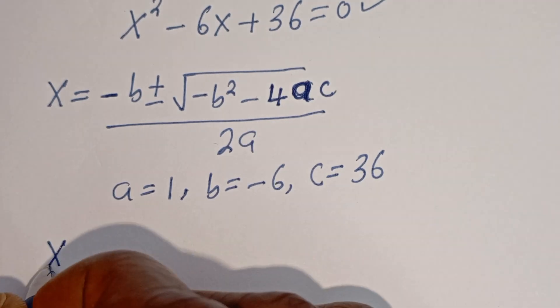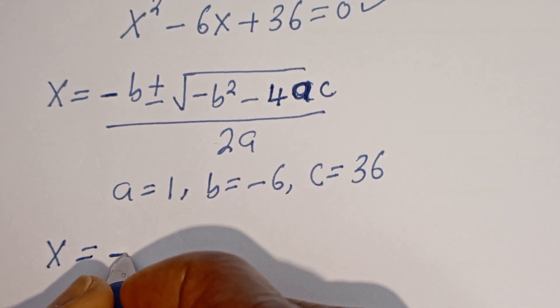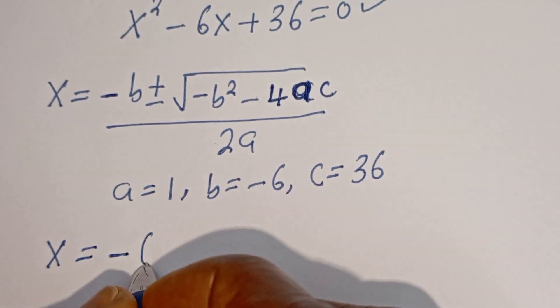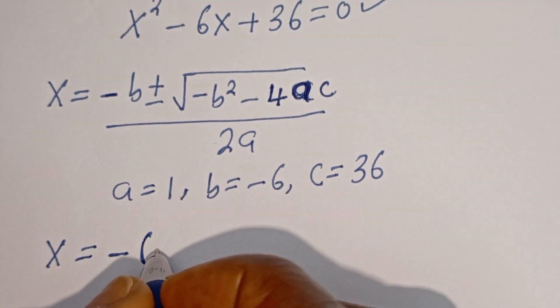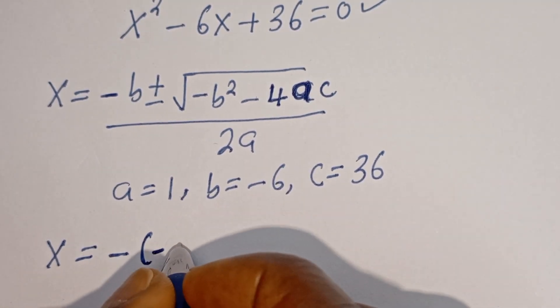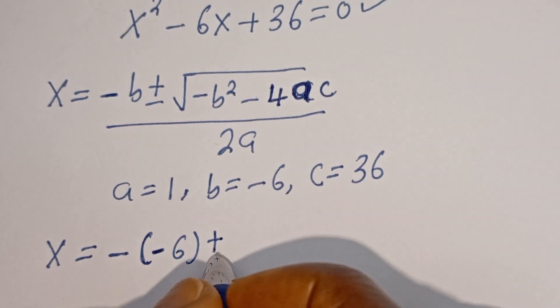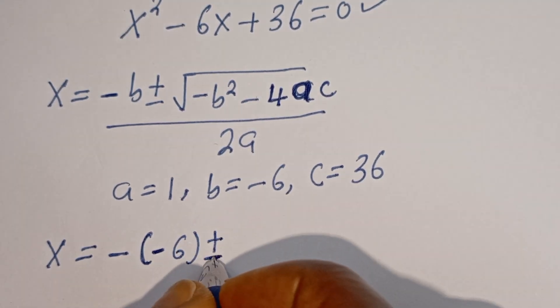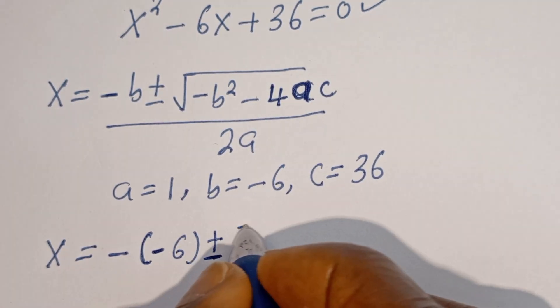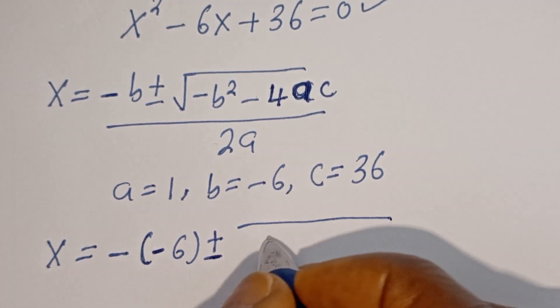So s is equal to negative bracket negative 6, plus or minus square root of negative b squared minus 4ac, divided by 2a.